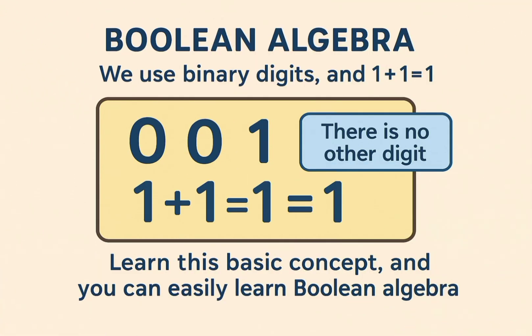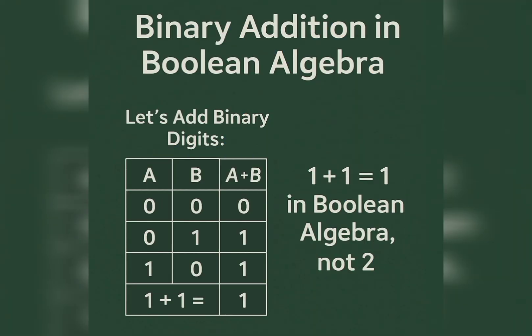This leads us to Boolean algebra. In Boolean algebra we use binary digits, and one plus one equals one — not two. There are no other digits, just zeros and ones. For example, in Boolean addition: zero plus zero equals zero, zero plus one equals one, one plus zero equals one, and one plus one equals one.